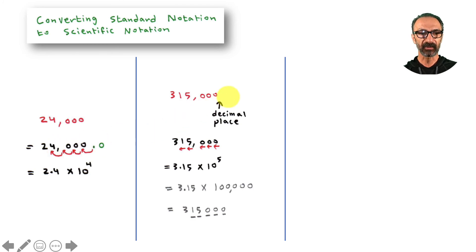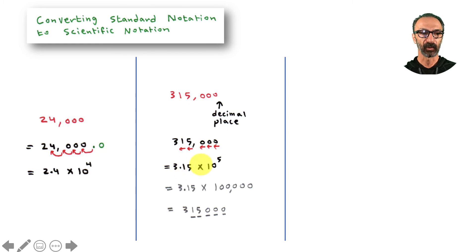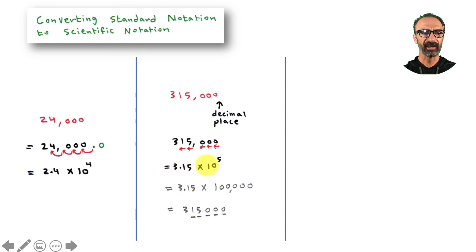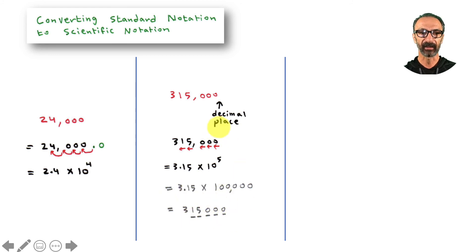Another example: the decimal is at the end — move it five places to get 3.15, which is less than 10. So the result is 3.15 times 10 to the fifth. To support this: 10 to the fifth means one followed by five zeros — 100,000. When you multiply 3.15 by 100,000, you move the decimal five places and get back to the original number.